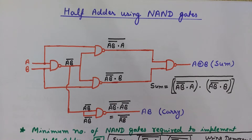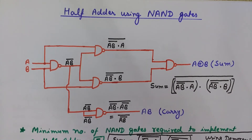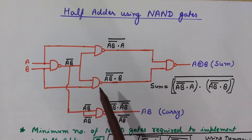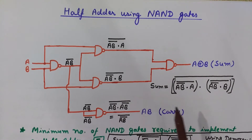5 NAND gates is the minimum number required to implement a half adder — keep that in mind. In the next video we will also see how we can create a half adder using only NOR gates, and 5 NOR gates are required for that as well. So let's begin our lecture.